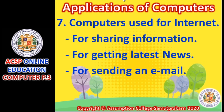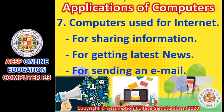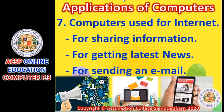Number seven: computer using the internet. The internet connects millions of computers together. We will talk about the internet in the next lesson. Computers are used for sharing information — for example, sharing on Line, Facebook, Instagram, and social media. For getting related news, you can read or listen to the news from the internet. For sending an email or sending SMS, short messages, or inbox.